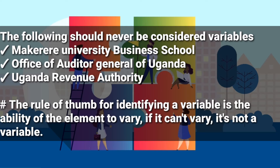The following should never be considered variables. First, Makerere University Business School (MUBS) — it is an institution; it doesn't have the capacity of taking more than one value or quality and it cannot be measured. Second, the Office of the Auditor General of Uganda — it is just an office; it cannot be measured and it doesn't change. Third, Uganda Revenue Authority — it is a government institution; it doesn't change and cannot be measured.